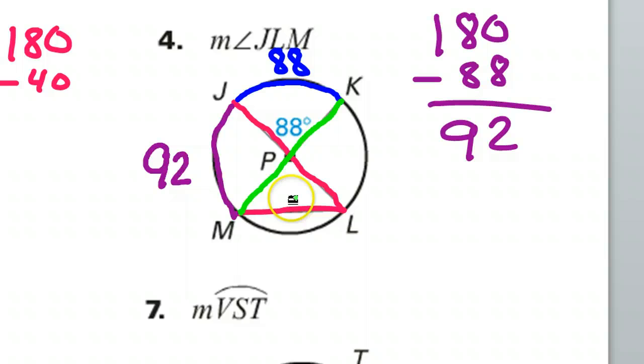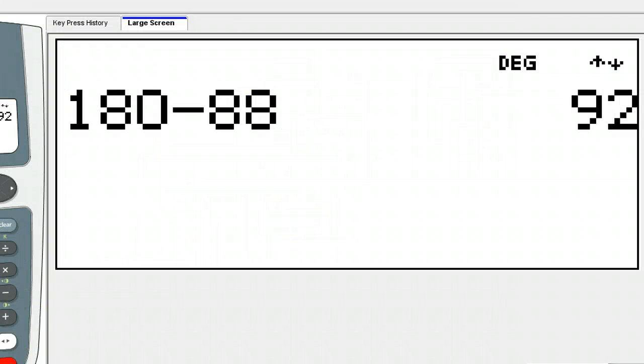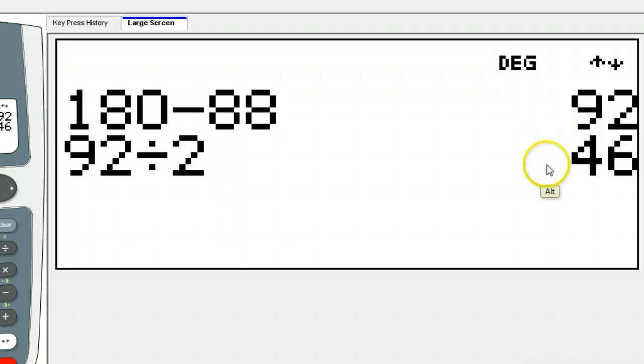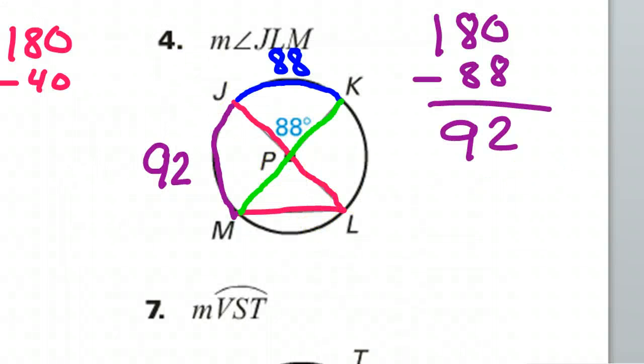Now remember, our goal was to find this angle right here. Now this is an inscribed angle, so this angle should be half of the arc. So 92, you say, well, what's 92 divided by 2? 46. So that means this should be 46 degrees. So that's the answer. 46 degrees.